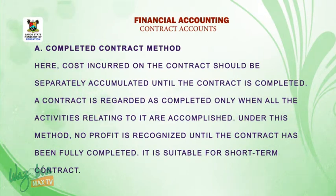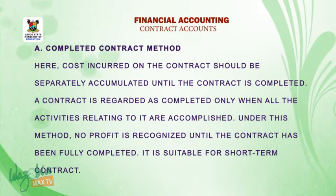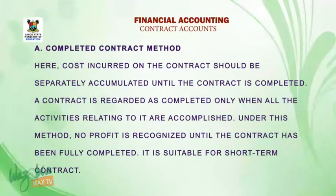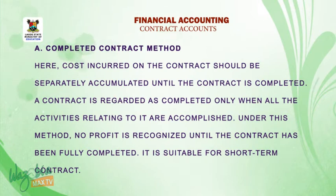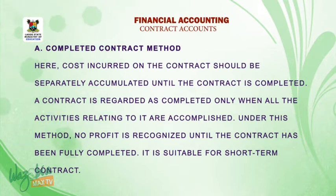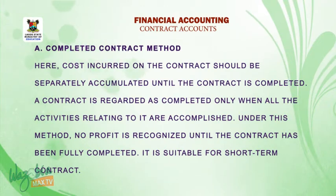A. Completed contract method. Here, costs incurred on the contract should be separately accumulated until the contract is completed. A contract is regarded as completed only when all activities relating to it are accomplished. Under this method, no profit is recognized until the contract has been fully completed. It is suitable for short-term contracts.